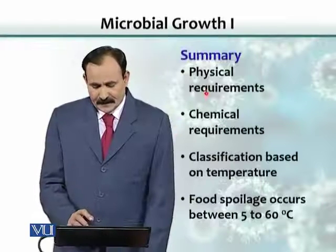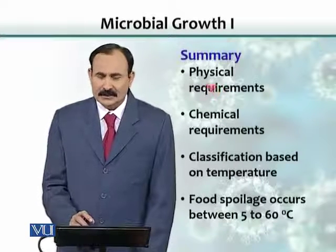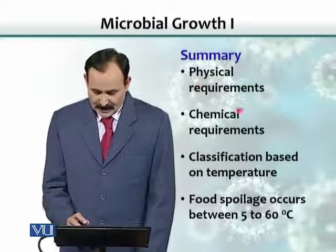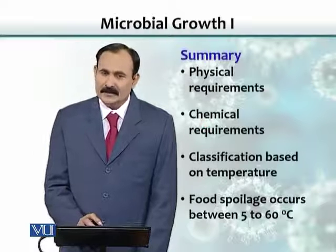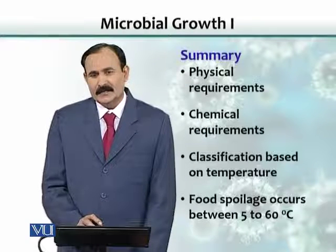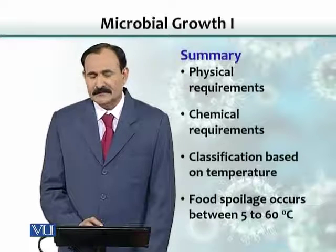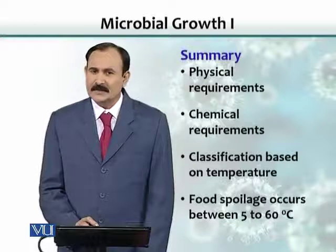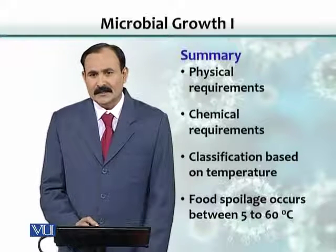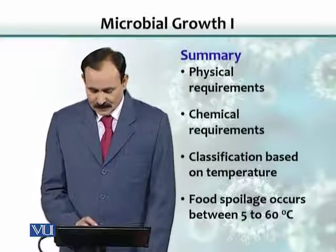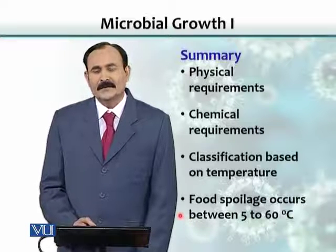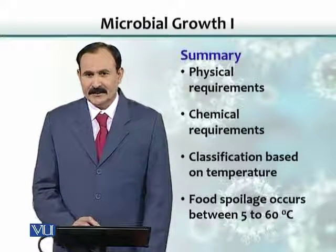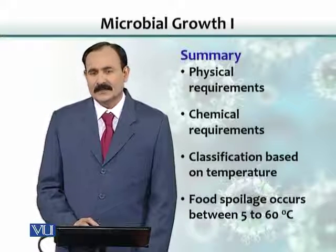In summary, there are physical requirements — pH and osmotic pressure — and chemical requirements, such as carbon source, nitrogen source, and phosphorus source. Based on temperature requirements, bacteria are classified into various groups. Food can be preserved at temperatures that discourage bacterial growth: above 60 degrees Celsius or below 5 degrees Celsius.